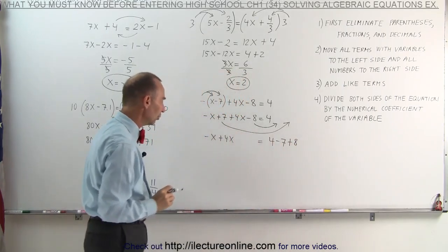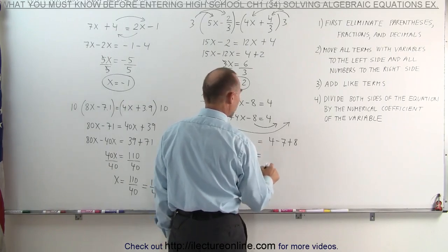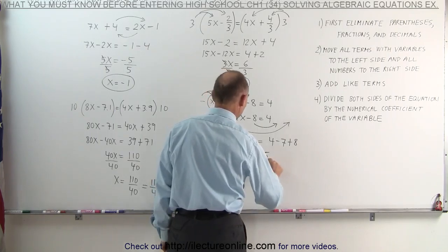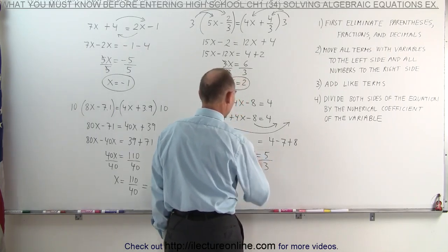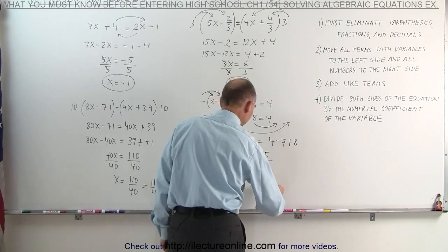Now we can combine like terms. Minus x plus 4x is 3x is equal to... That's 12 minus 7, which is 5. And finally, we divide both sides of the equation by the numerical coefficient in front of x. And x equals 5 divided by 3.